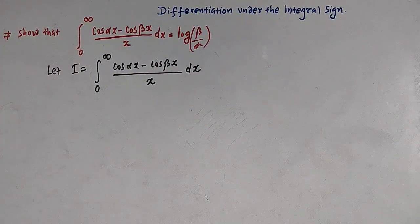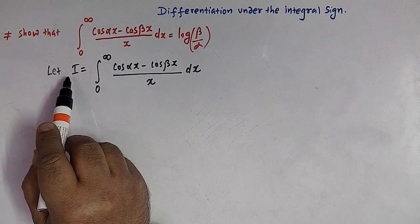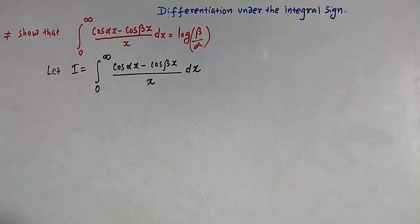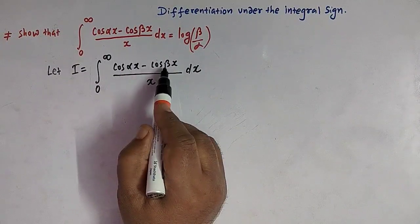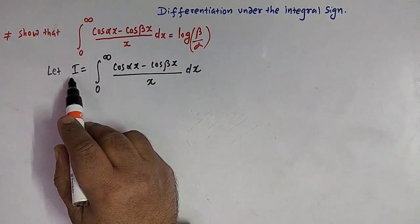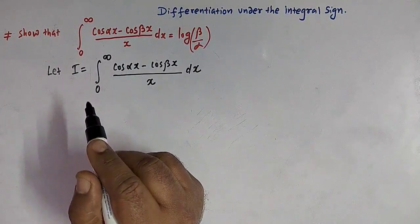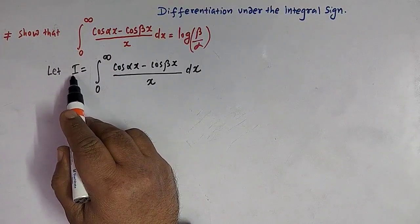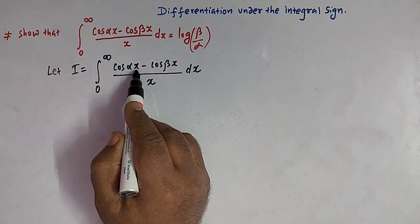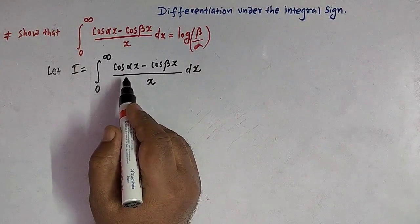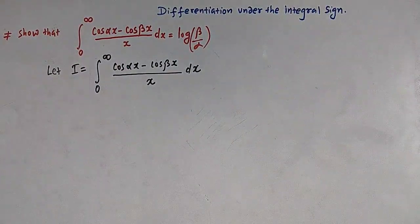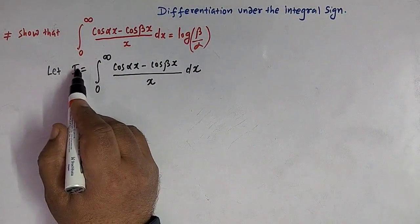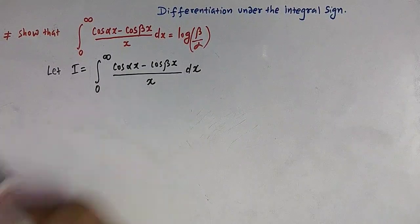When we use the concept of differentiation under the integral sign, what we usually do is differentiate the integral with respect to some variable. Here in the integrand we see that we have three variables: alpha, beta, and x. So we'll select alpha as our variable and differentiate I with respect to alpha, treating x and beta as constant. In other words, we'll partially differentiate I with respect to alpha.